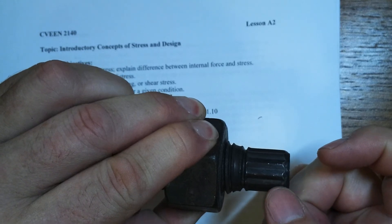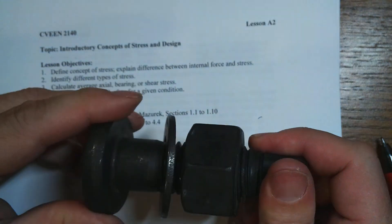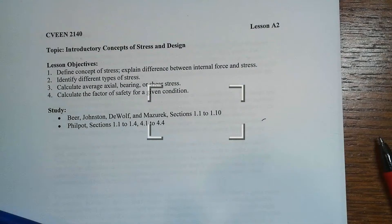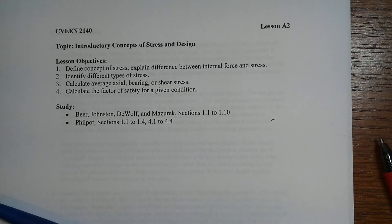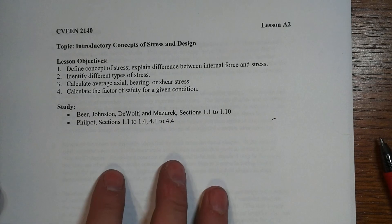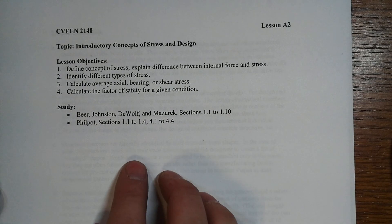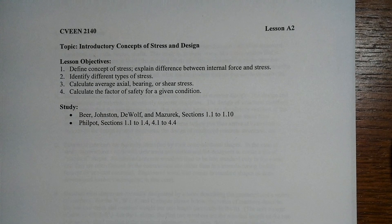We'll actually learn about that in the torsion section of the course. But right now we're going to focus on these three basic conditions of stress, and we'll have a couple of very realistic examples to work through. So get your drawings of the Waddell A-Truss handy — those will be linked on the Canvas webpage — and away we'll go.